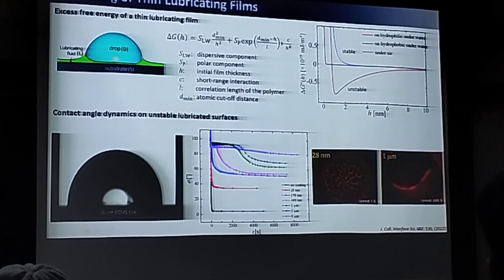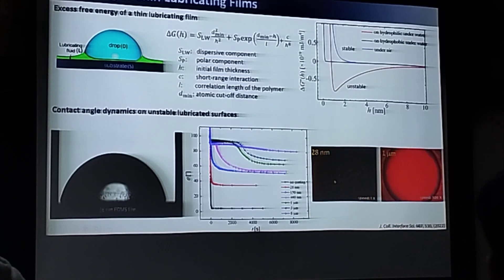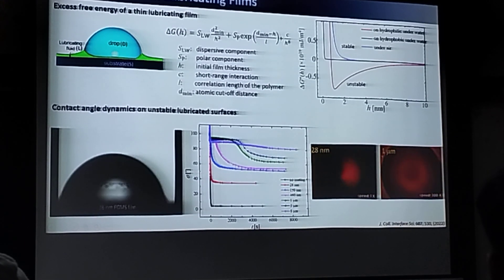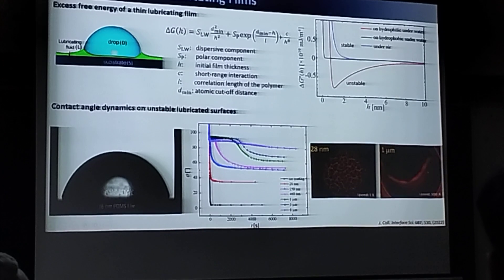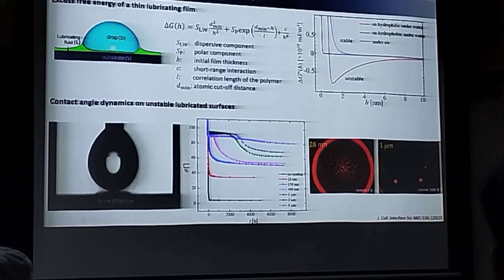And also the thickness: when the lubricant thickness is around 28 nanometers, what we see is like a satellite droplet kind of pattern. If the thickness is very high, like a few microns, what we see is only very few drops inside this region.